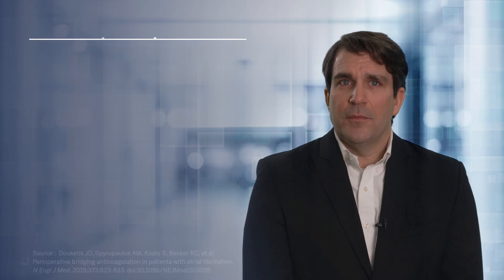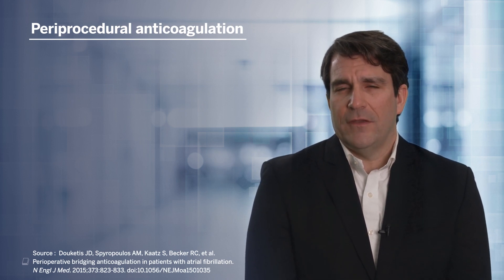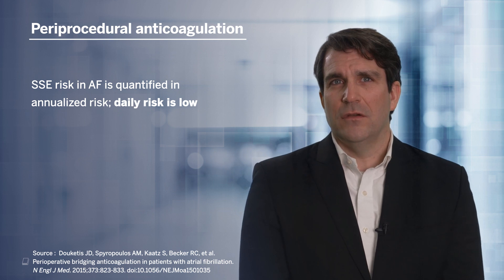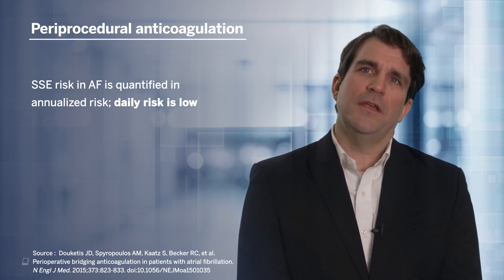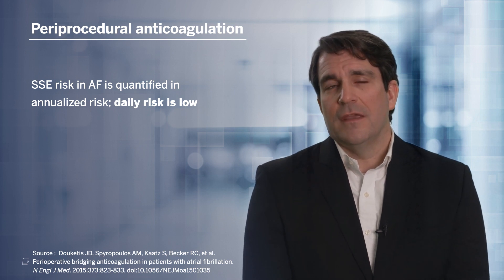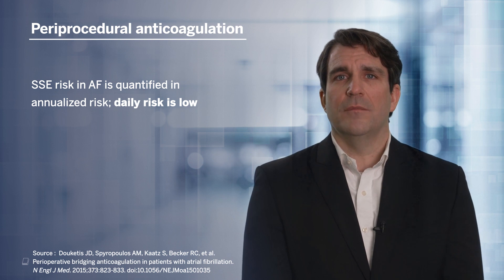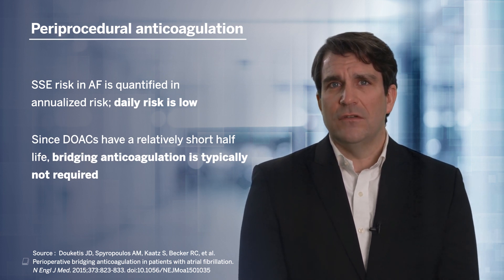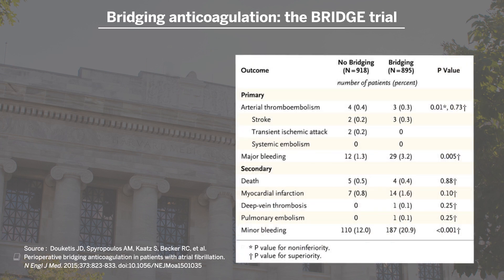It's also important to mention periprocedural anticoagulation. Many patients with AFib are on anticoagulation indefinitely, and there will be times where that anticoagulation needs to be interrupted. Stroke and systemic embolism risk in AFib is really measured as an annualized risk — even the highest CHADS-VASc score patients have an 8 to 10 percent risk of stroke per year, not per day — so their daily risk is very low. Therefore, stopping anticoagulation for a day or two around a procedure may not be that risky. Because DOACs have a relatively short half-life, they usually do not need bridging anticoagulation. Bridging anticoagulation has often been used in patients treated with warfarin, which has a much longer half-life, and this was studied in the BRIDGE trial published in 2015.